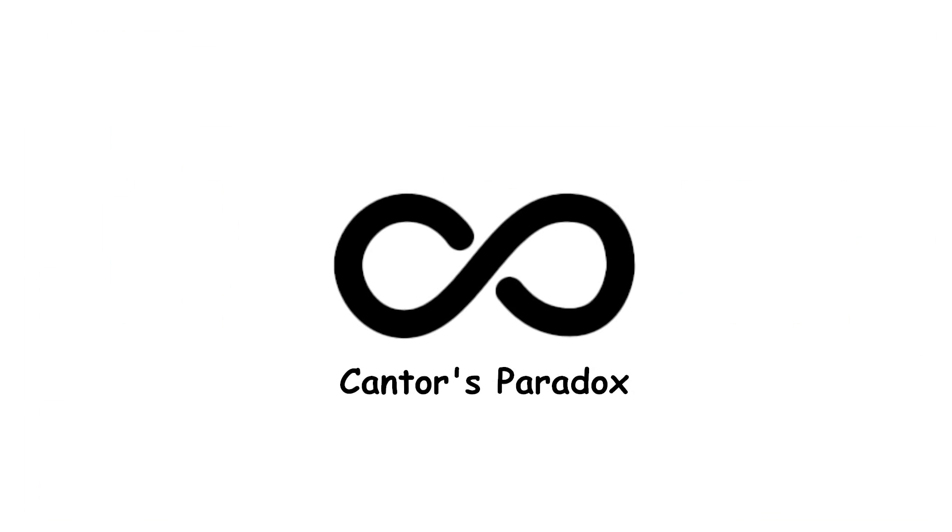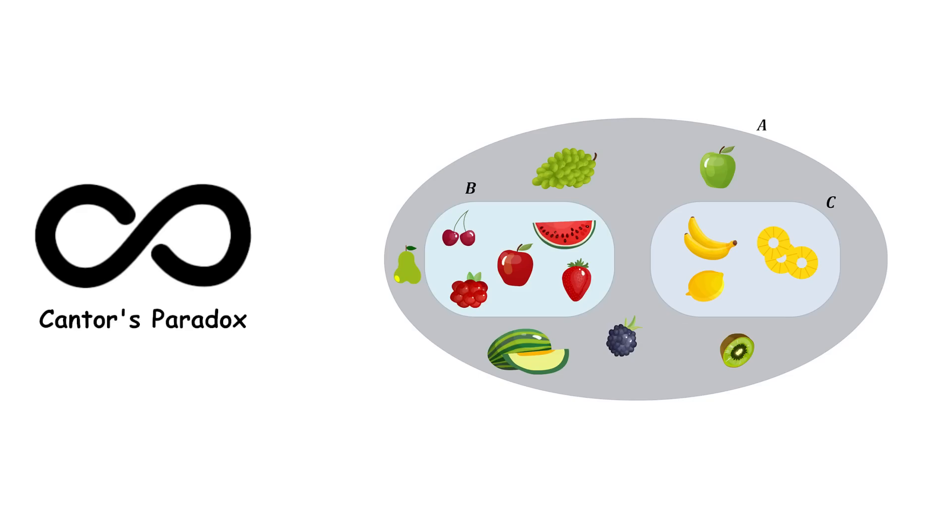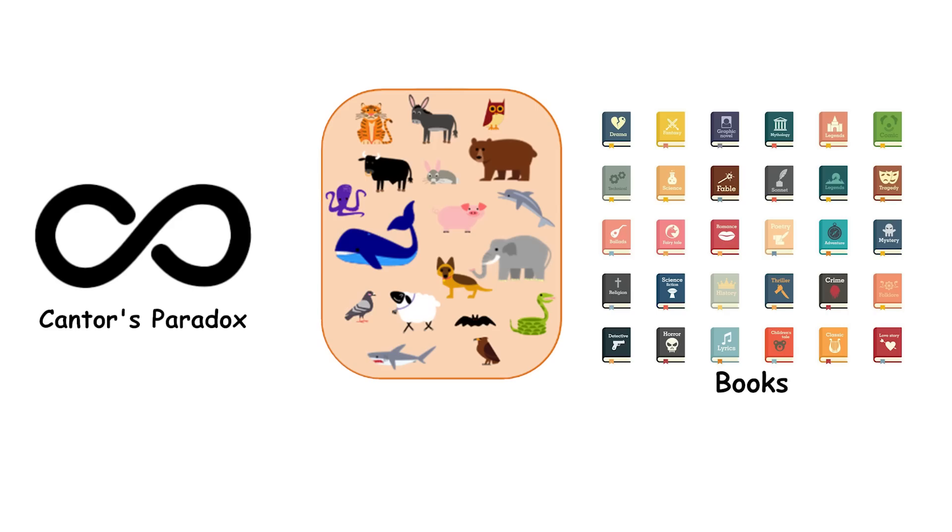Cantor's Paradox. Imagine you have a set A that contains smaller subsets. These subsets could be any groups within A, like different categories of animals in a zoo or types of books in a library.